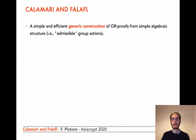Calamari and Falafel are two new ring signature schemes from post-quantum assumptions. They are instantiations of a new simple and efficient generic construction of OR proofs for a class of group actions that we called admissible group actions. We instantiate the admissible group actions both with isogeny assumptions, obtaining Calamari, and with lattice assumptions, obtaining Falafel.